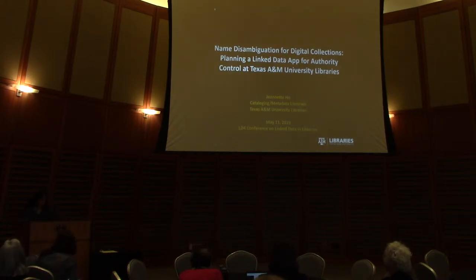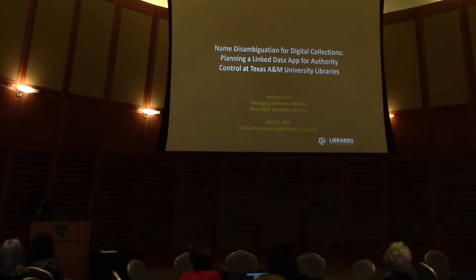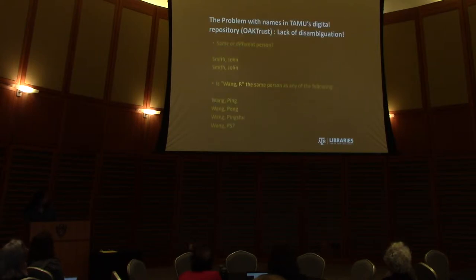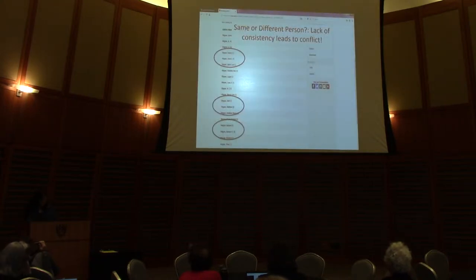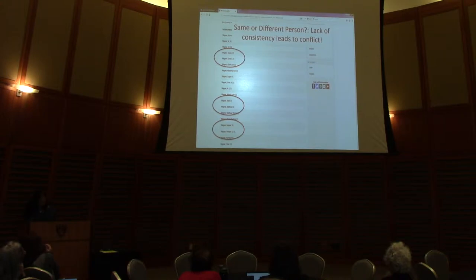I'm going to be talking about some plans being made at Texas A&M University to develop a name application, or app, that will utilize linked data to bring some measure of authority control to our repository. Our repository suffers from the same problem repositories everywhere do, in that we don't have name disambiguation. Two John Smiths — you can't tell whether they're the same person or two separate authors. Wang P — you can't tell just by looking whether he or she matches existing names in the IR. This is a screenshot of our author browse index, so you can see it's a common problem — names are not being entered consistently.